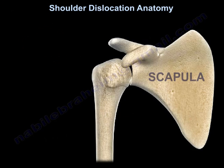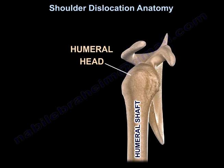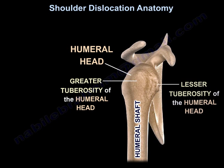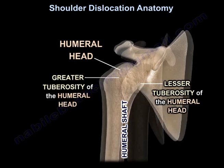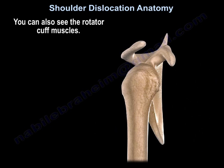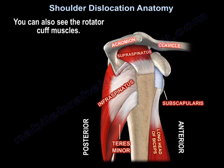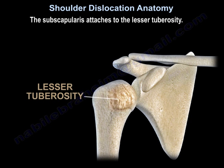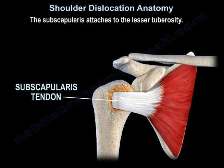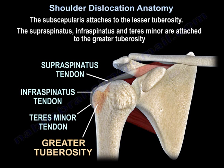Here is the proximal humerus. You can see the head, the shaft, the greater tuberosity and the lesser tuberosity. You can also see the cuff muscles. The subscapularis is attached to the lesser tuberosity. The supraspinatus, infraspinatus, and teres minor are attached to the greater tuberosity.